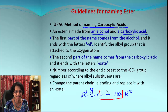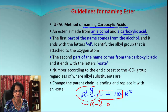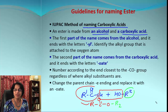What remains is an ester: R-COO, which comes from the acid part, and we get the alkyl group that comes from the alcohol. If you understand this, naming an ester is pretty easy.